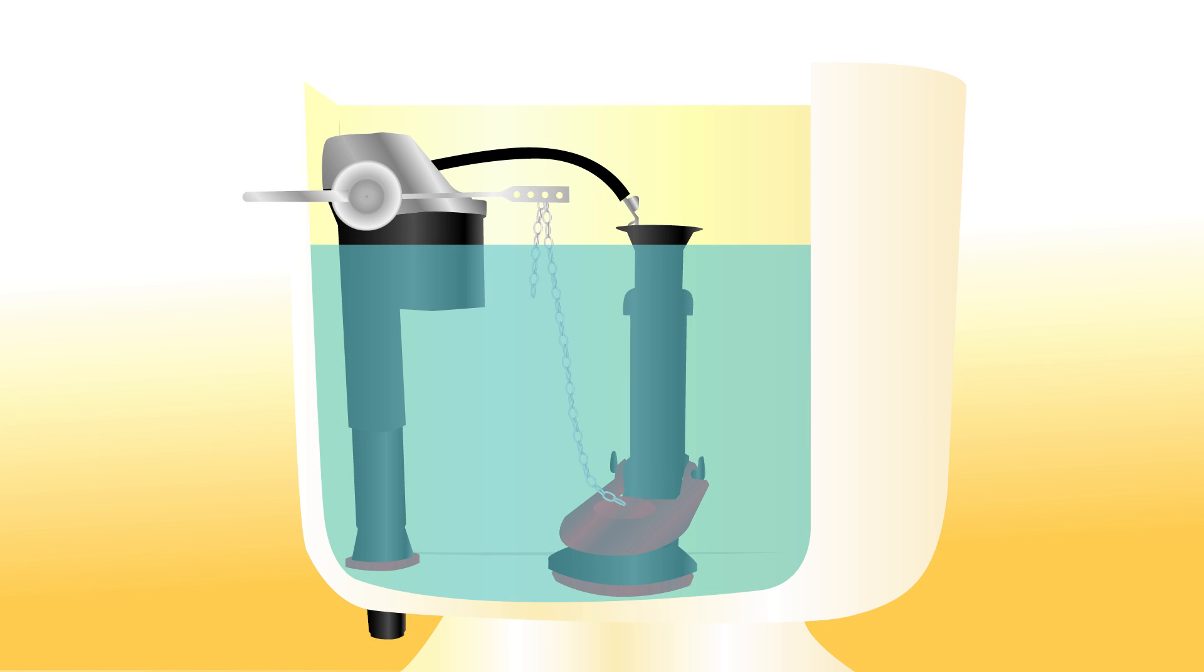The water in the tank keeps the flapper sealed against the flush valve opening. The flapper is attached to the tank lever by a chain, and when the tank lever is pressed, the chain lifts the flapper.